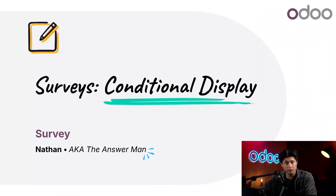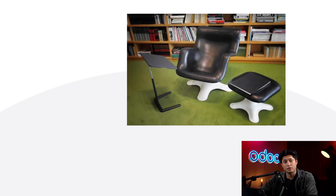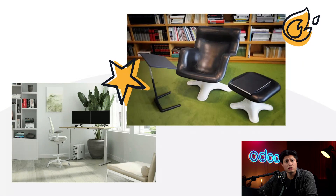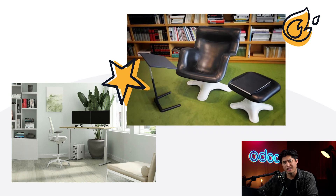Welcome back. Today we're diving into conditional displays in Odoo Survey, a powerful tool that lets you ask the right questions to the right people at the right time. Stealthywood just shipped 5,000 ergonomic desks and chairs and our product team is looking for feedback, but our generic post-purchase survey has an extremely high dropout rate and we aren't getting the product-specific feedback we need because answers aren't tied to specific SKUs.